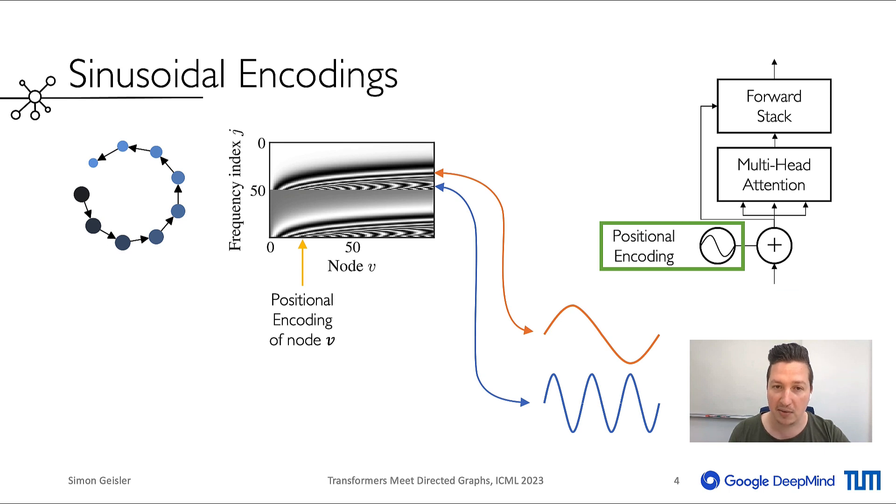So how can we make use of such a directed graph? To explain how, I first consider again the special case of sequences. Here we may use sinusoidal position encodings to encode the node positions.